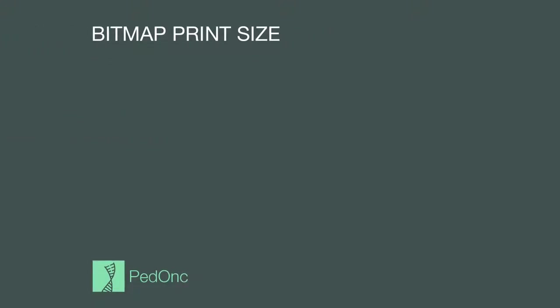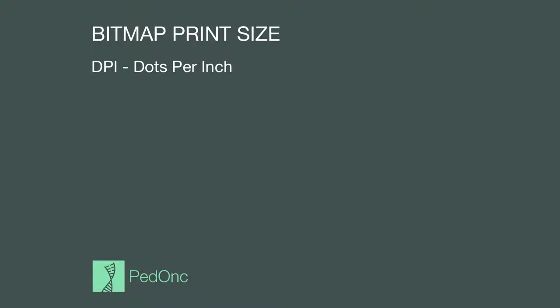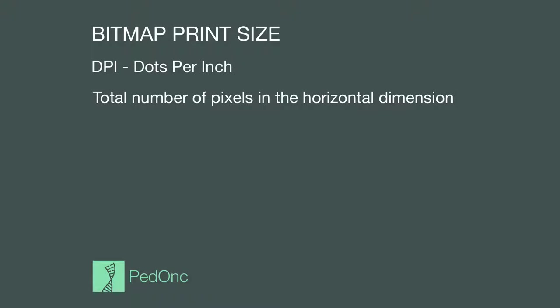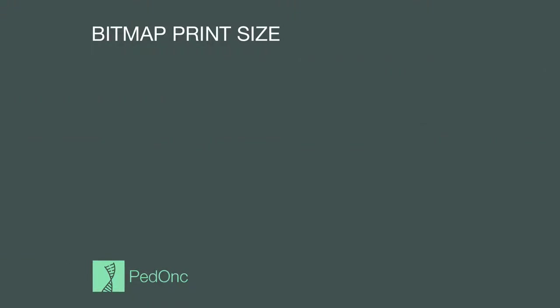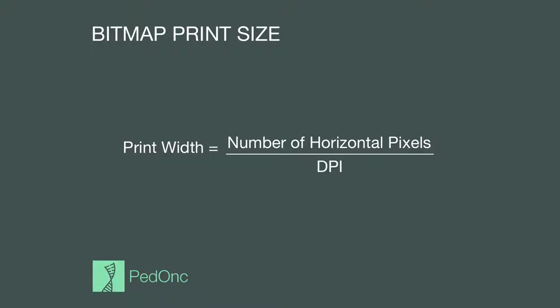We'll start by looking at a few concepts, beginning with bitmap image print size. The print size of a bitmap image is determined by three factors: the dots per inch or DPI ratio for the image, the total number of pixels in the horizontal dimension, and the total number of pixels in the vertical dimension. The print width is calculated by dividing the number of horizontal pixels by the DPI ratio, and the print height by dividing the vertical pixels by the DPI ratio.